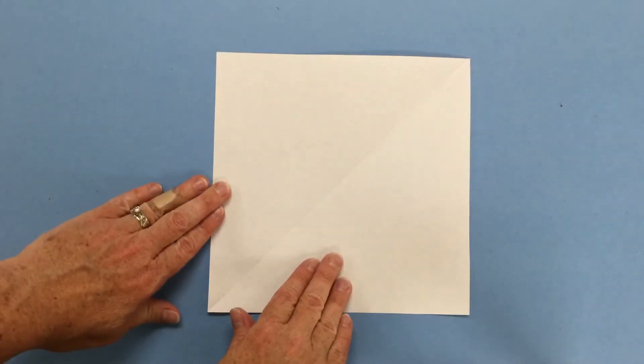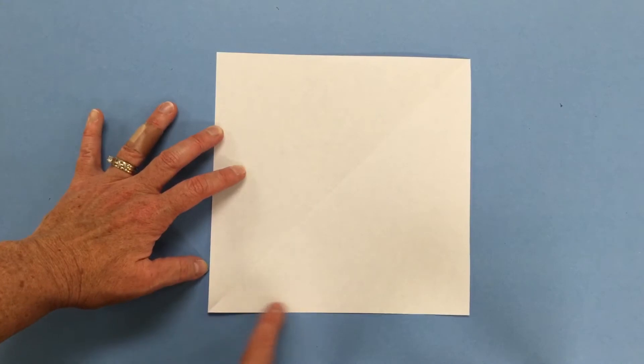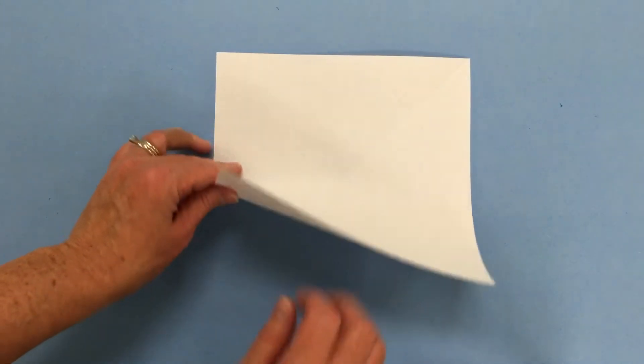Welcome back boys and girls. We are now going to make the bottom half of our box. You'll want to take the smaller square of your two papers and set that in front of you, and we're going to then bring the bottom up to the top.